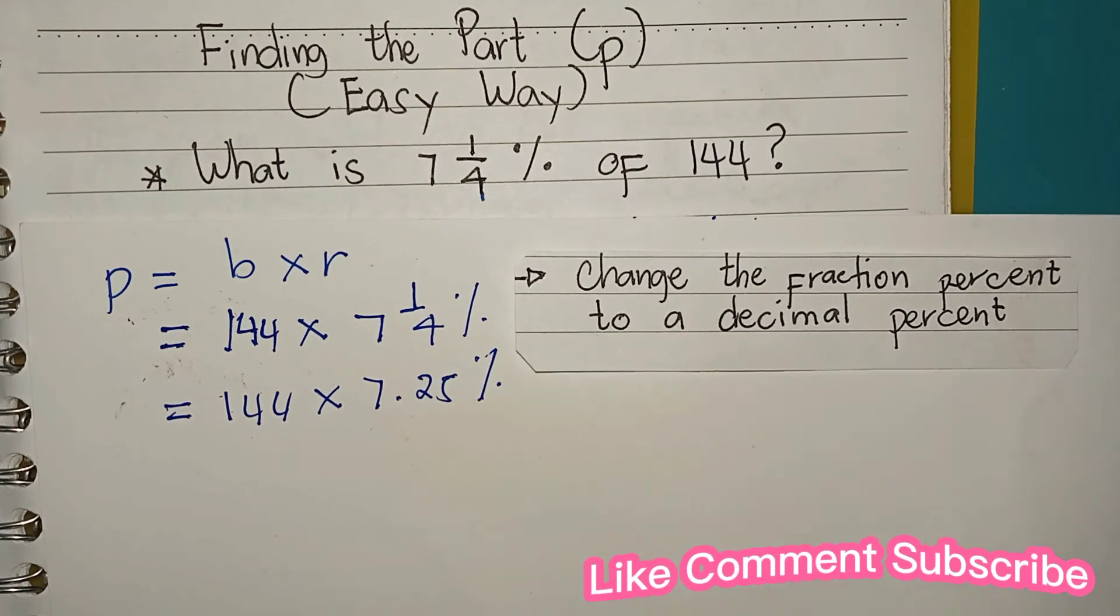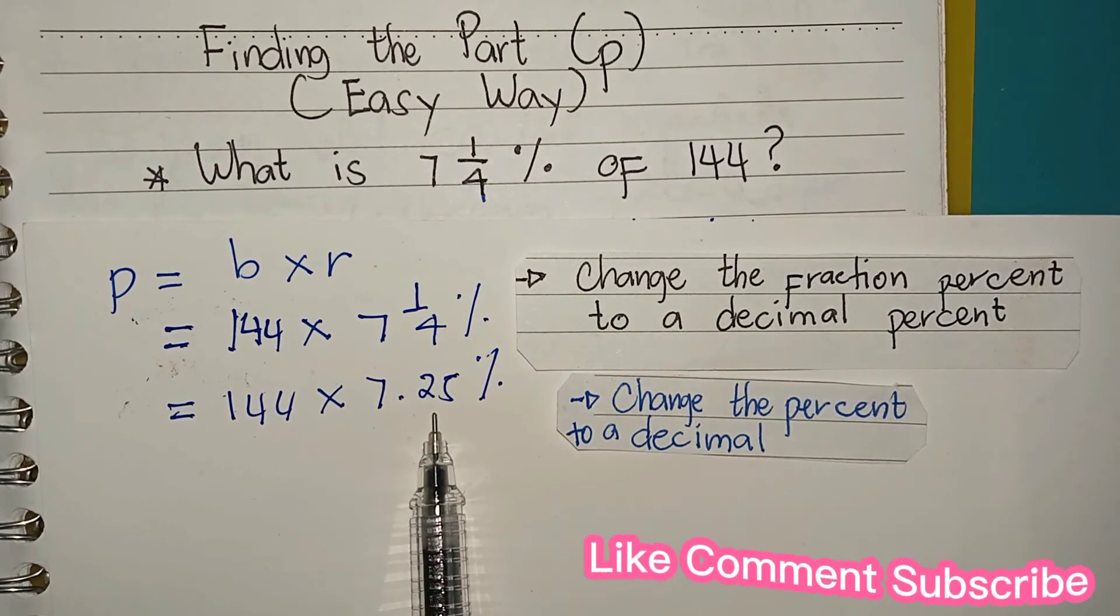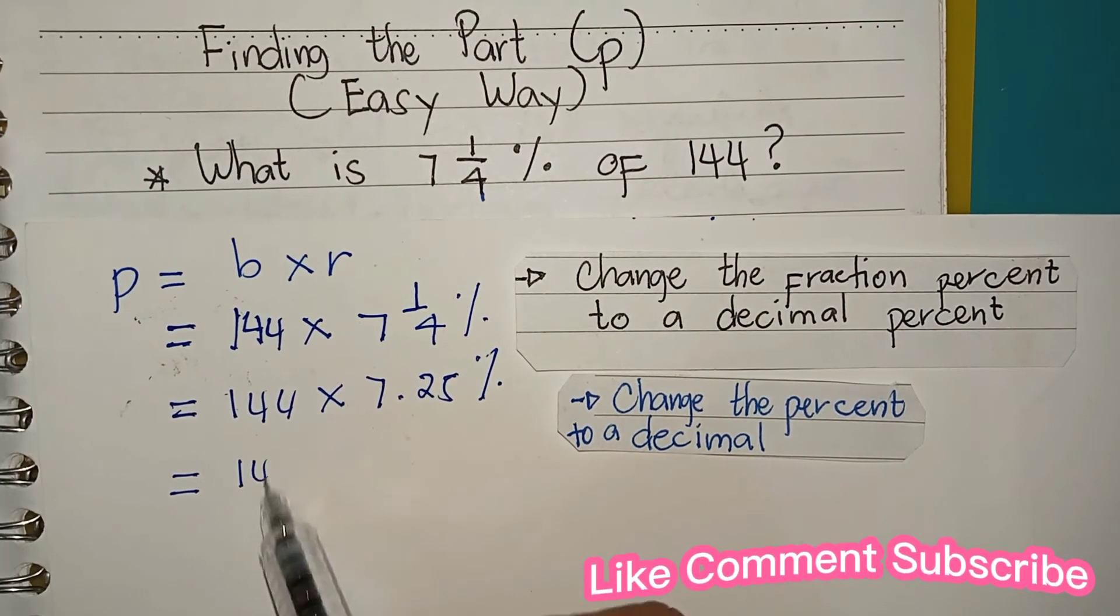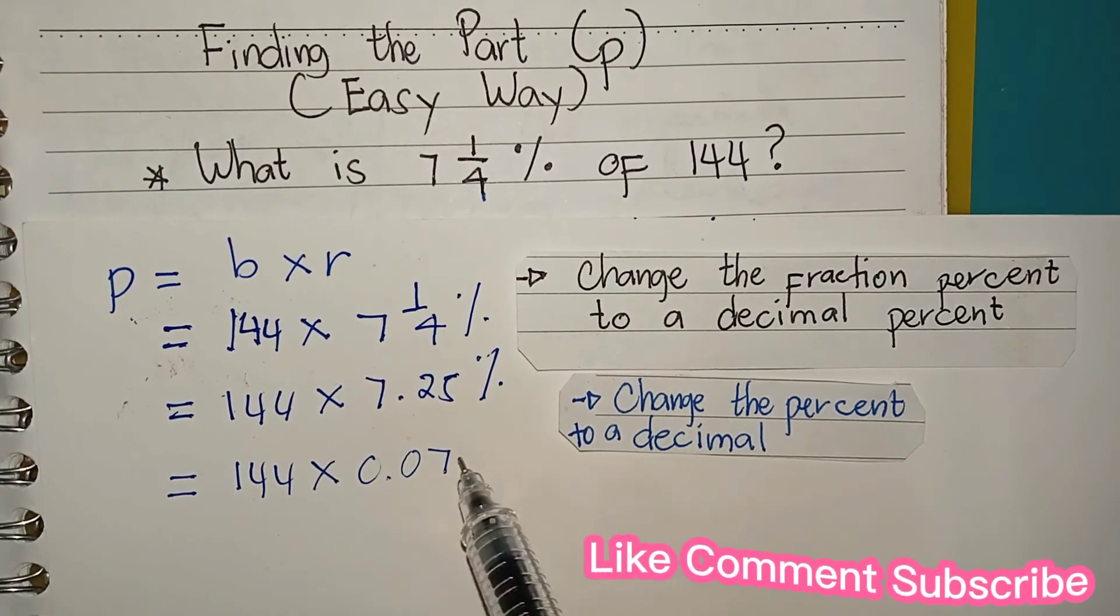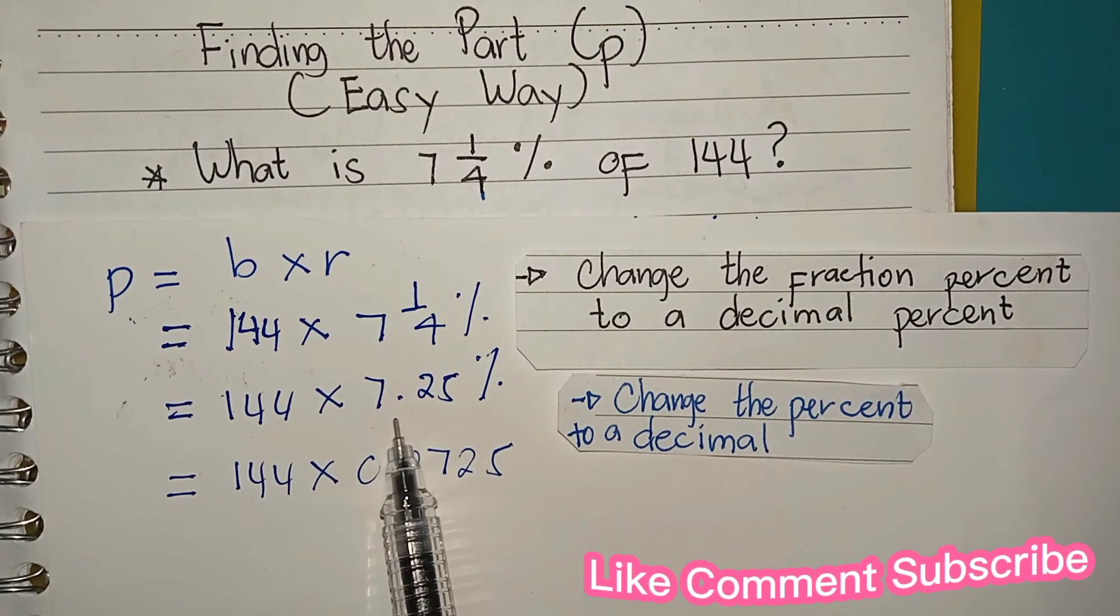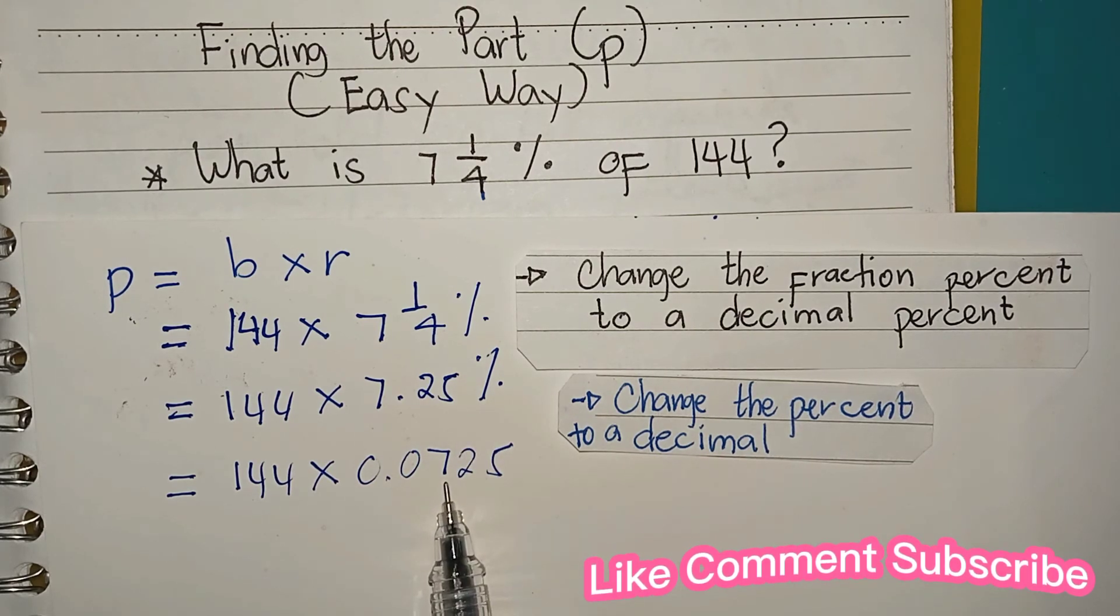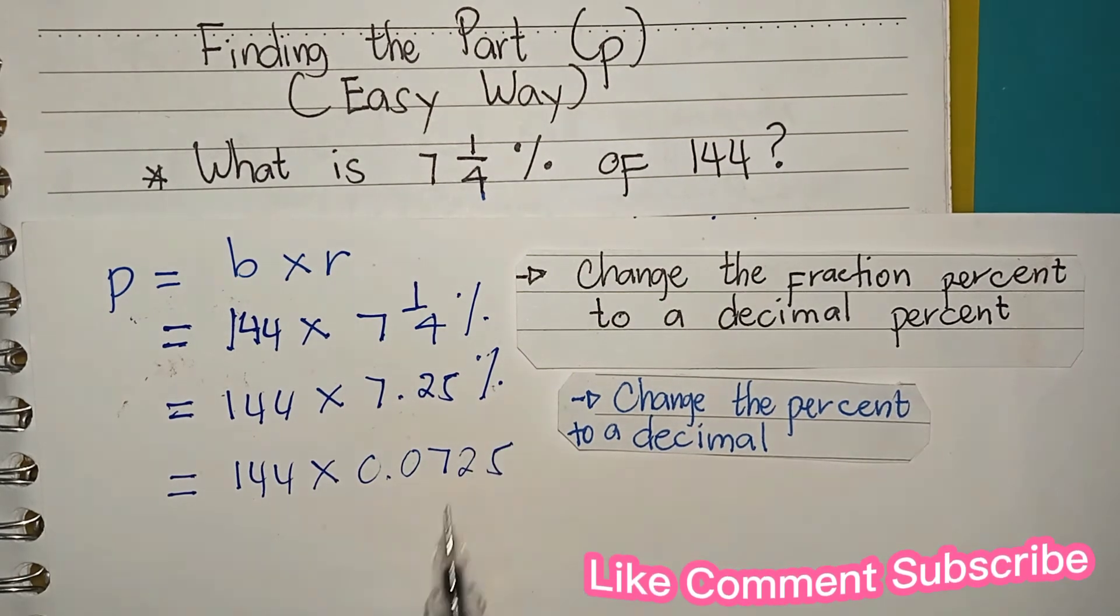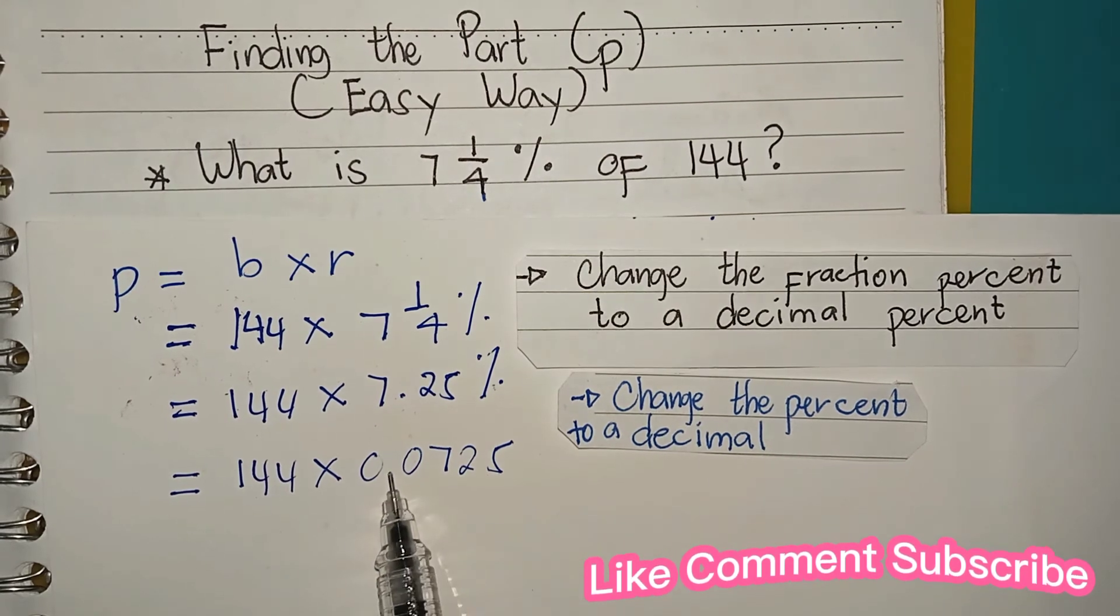The next step is to change the percent to a decimal. Copy 144 times 0.0725. How to change 7.25 percent to a decimal? Drop the percent sign, then move the decimal point two places to the left. That's why the answer is 0.0725.